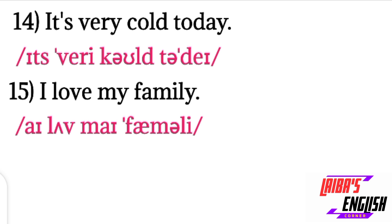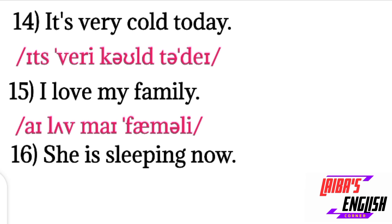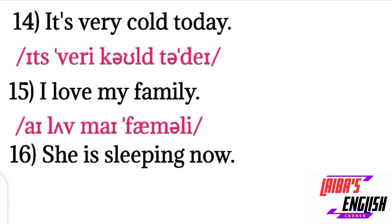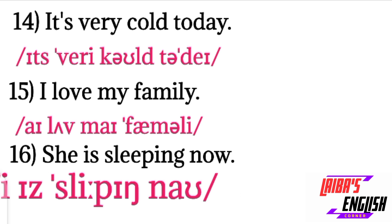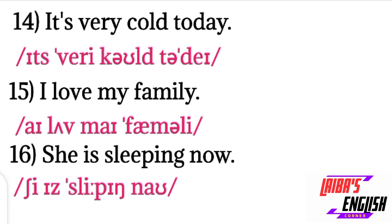Sentence fifteen: I love my family. 'I' is written the same as before. 'Love': L sound, the short 'uh' vowel, and V sound. 'My' is the M and I diphthong. 'Family': F sound, short 'a' sound, M sound, then the 'sh' sound, and L and short 'e' sound. I love my family.